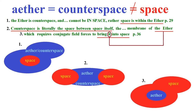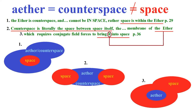I decided to illustrate it. He says the ether is counter-space and cannot be in space — rather, space is within the ether. That's on page 29, illustration number one: space is within the ether. Next, counter-space is literally the space between space itself — illustration two: now ether is between the two spaces. Then illustration three says the ether requires conjugate field forces to bring it into space — now ether is within space. You can see that through the pages he goes into contradiction. He doesn't have the slightest clue what he's saying.